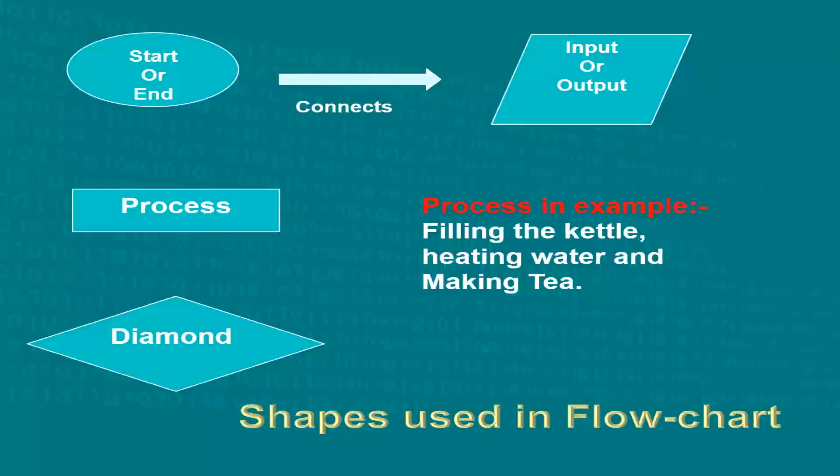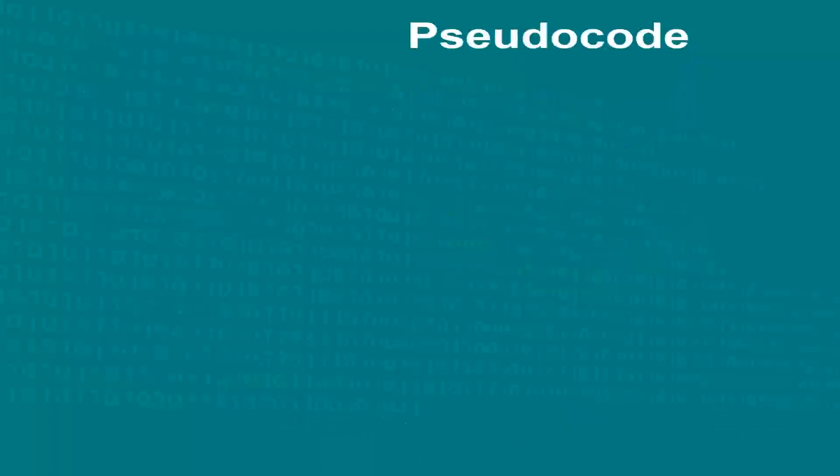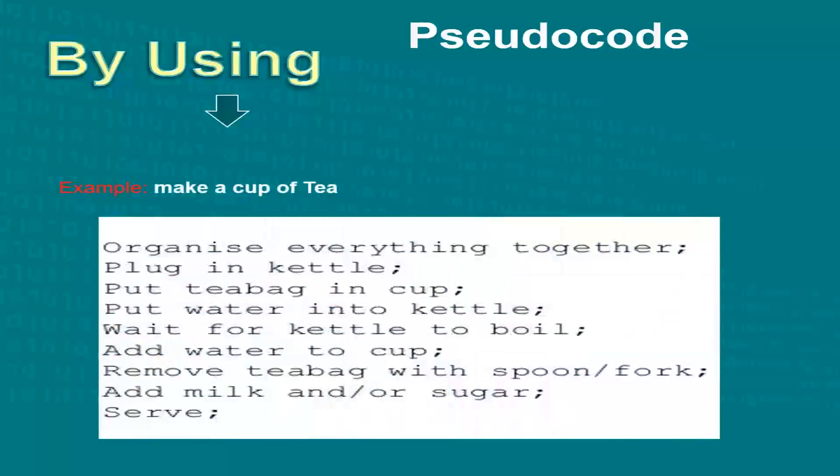Algorithms can also be represented using pseudocodes. Pseudocode is a simple way of writing programming code in English. It is not actual programming language. It uses short phrases to write code for programs before you actually create it in a specific language. In other words, it specifies the steps required to process a task.